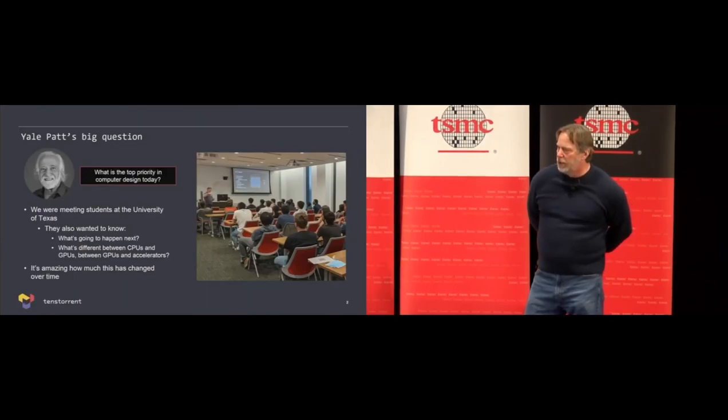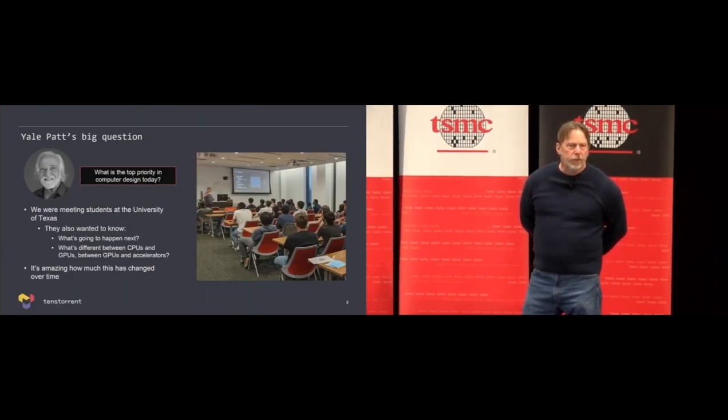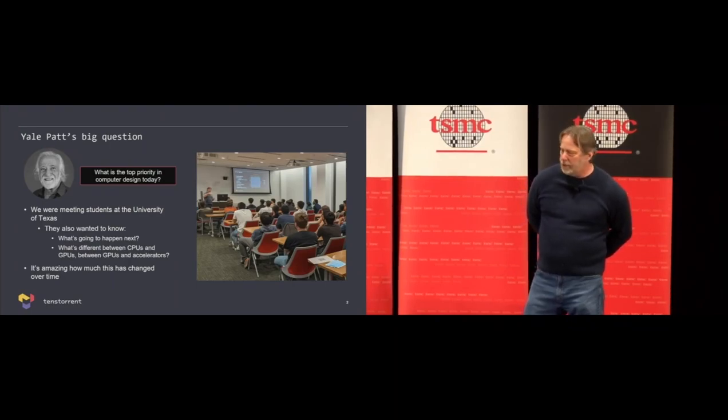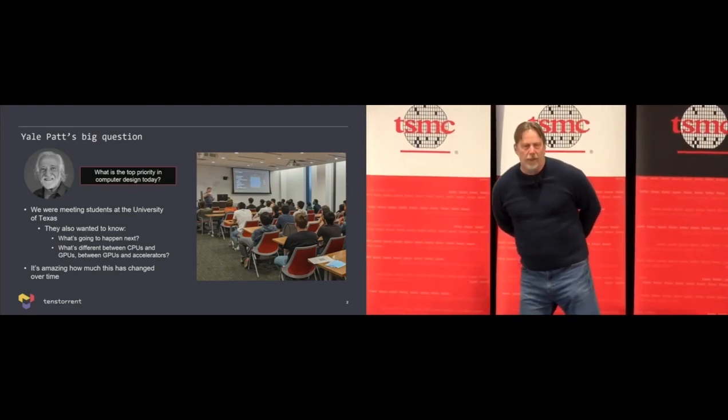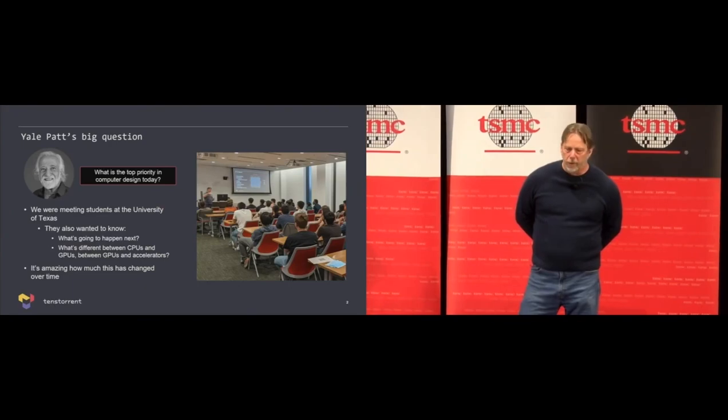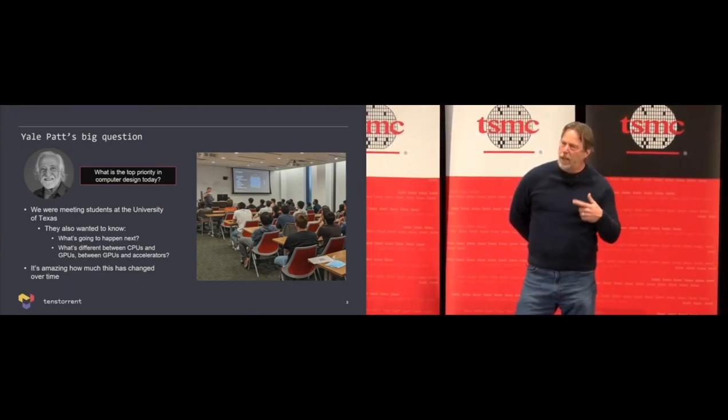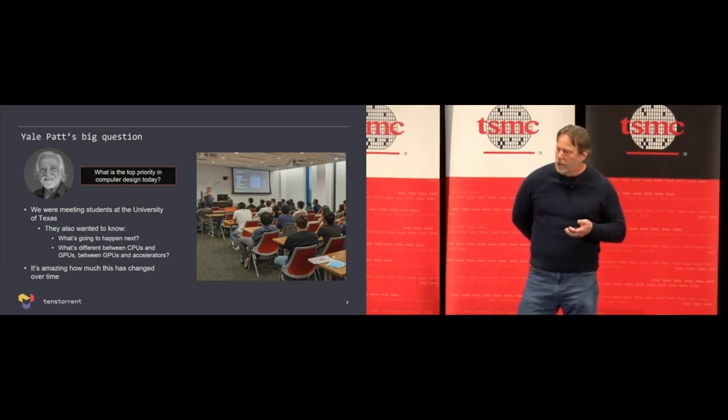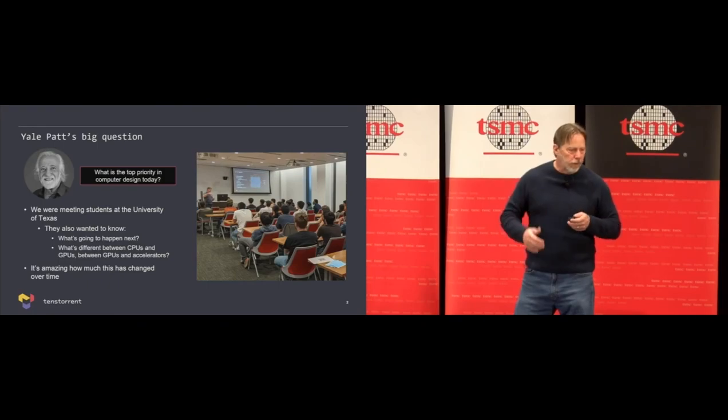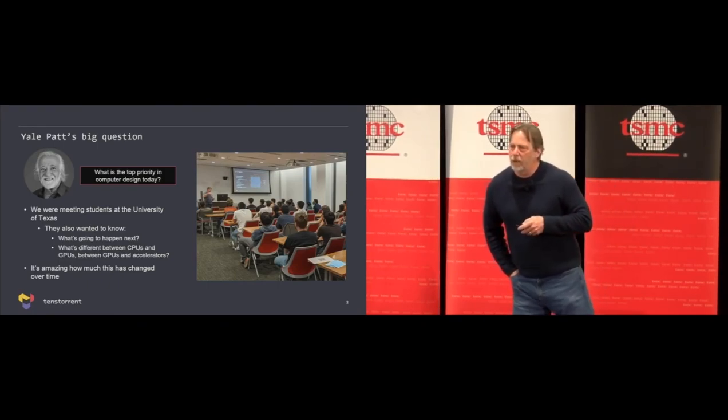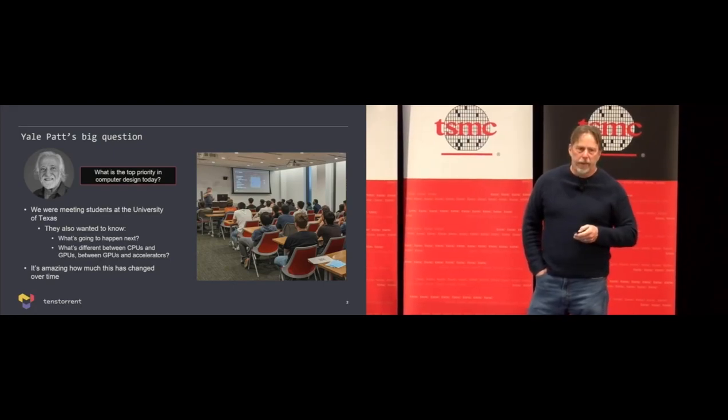A couple months ago, I was down at UT talking to some of Yale Path students, and for people who don't know, Yale Path's a really great computer architect, and he's graduated an unreasonable number of really good students, and they've had a really big impact on the industry. He asked me, what's your top priority in computer design today? I was thinking, that's a really complicated question, because it's changed so much. And then the students wanted to know, what's the difference between a CPU and a GPU, and a GPU and an AI accelerator, and why are they different, and is it going to change a lot? Is there a stable code base what's going on in AI? We had a really interesting conversation, and it struck me just how much this has changed over time, and just looking ahead how much it's going to change.